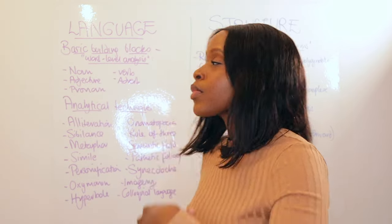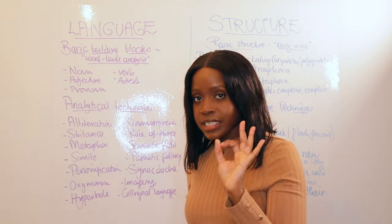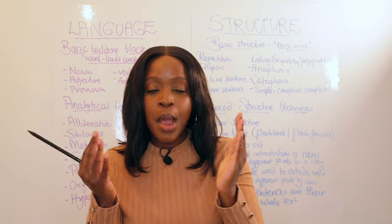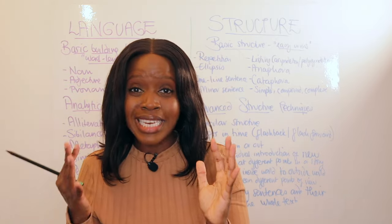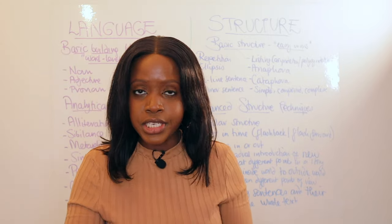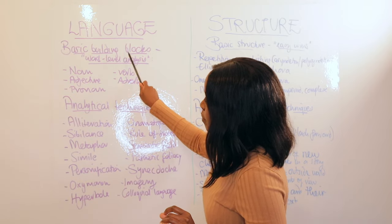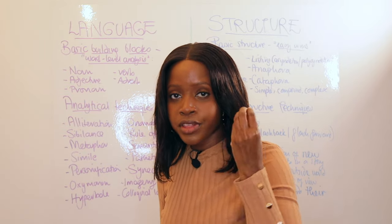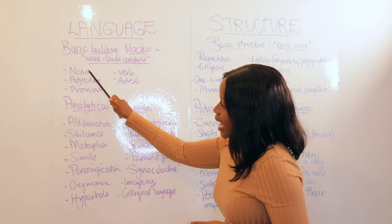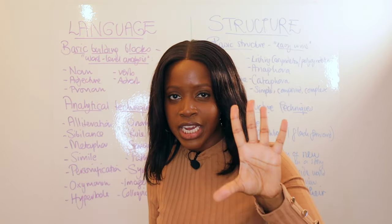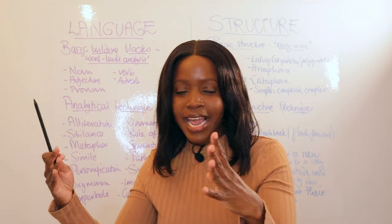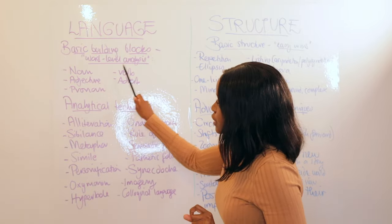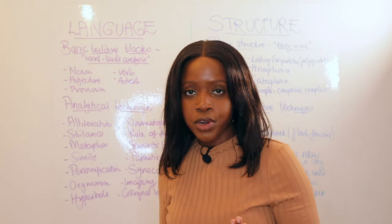When it comes to language analysis — for example, Paper 1 Question 2 — make sure you distinguish between language where you can zoom in and do word-level analysis, and then step back to use slightly more advanced techniques. For word-level analysis, there are five techniques to commit to memory: noun, verb, adjective, adverb, and pronoun. These five will carry you through any extract.